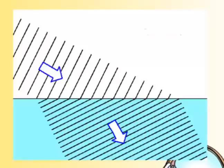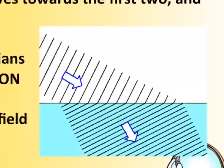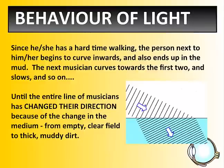Every line behind that in the band, every subsequent line, follows the line in front and they too begin to curve towards the mud. Every line of musicians is changed in their direction because of the medium change — from the empty, clear field to the thick, dirty mud.